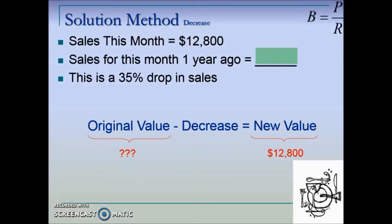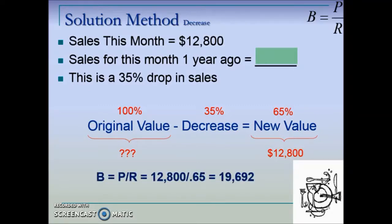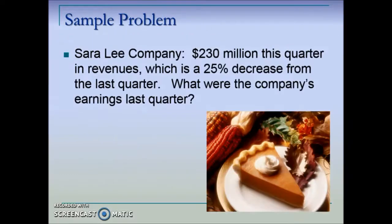Comparing percentages to solve this problem: the original value is 100 percent, and the problem tells us a decrease of 35 percent, so 100 minus 35 gives us 65 percent. The new value of $12,800 — the part — has a rate of 65 percent compared to the base. Using that part and rate, we can answer the question: sales one year ago, the original value, were $19,692.